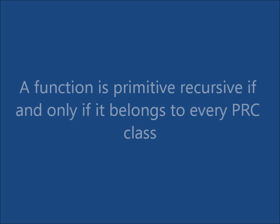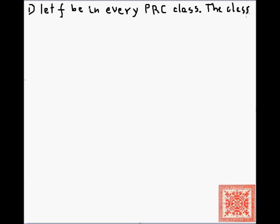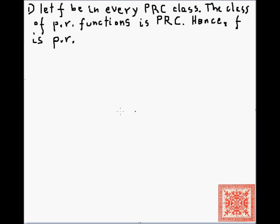Theorem two: a function is primitive recursive if and only if it belongs to every primitive recursively closed class. Let f be in every primitive recursively closed class. The class of primitive recursive functions is primitive recursively closed, as we just showed, so f is in that class, and hence it is primitive recursive.